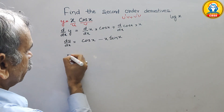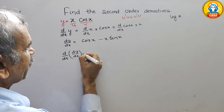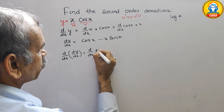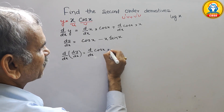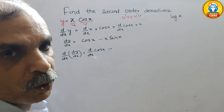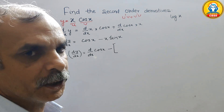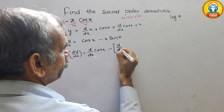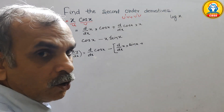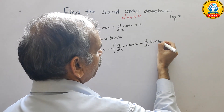Now for the second derivative, we differentiate cos x minus x sin x. These are two separate terms. We differentiate d by dx of cos x first, then for the x sin x term we again have a u and v form, so we apply the same product rule formula — being careful to use brackets to avoid mistakes. So it becomes d by dx of x into sin x plus d by dx of sin x into x.